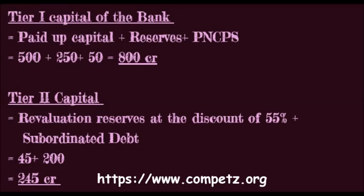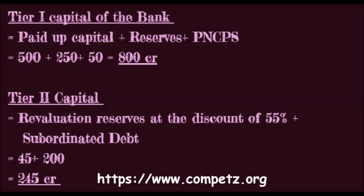To calculate Tier 2 capital, we require revaluation reserve — remember, revaluation reserve will be discounted by 55%, meaning we take only 45% of it — plus subordinate debts. That equals 45 plus 200, which is equal to 245 crore. Therefore, the Tier 2 capital is 245 crore. The total capital of Bank of Indians is 800 (Tier 1) plus 245 (Tier 2), which equals 1045 crore.